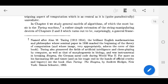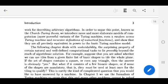Chapter 4, we study general models of algorithms, of which the most basic is the Turing machine, a rather simple extension of string manipulation devices of Chapter 2, which turn out to be surprisingly a general framework for describing arbitrary algorithms.